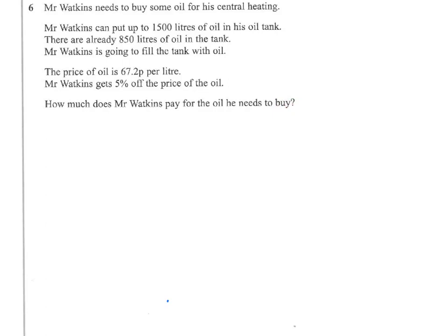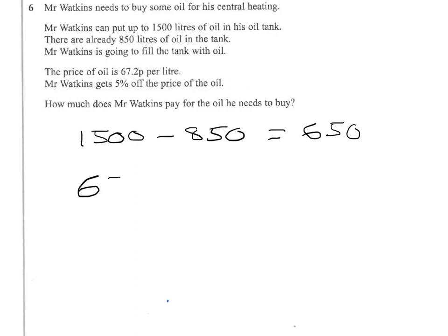Well, let's find out how much he needs to buy first. We need to do 1,500 subtract what is already in the tank. So, 1,500 take away 850. I'm sure you can do that on a calculator, or perhaps in your head — it comes to 650 litres. So, we need 650 litres, and we're going to pay 67.2 pence per litre.